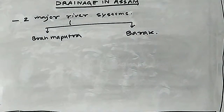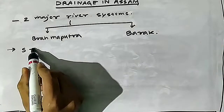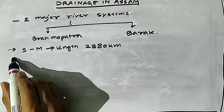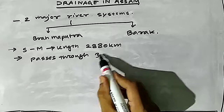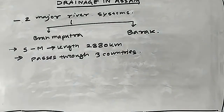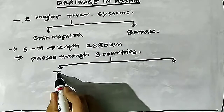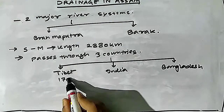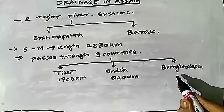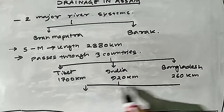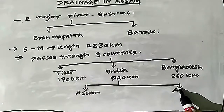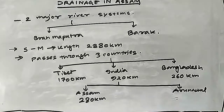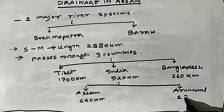Starting from the Brahmaputra basin, which can be said to be one of the largest rivers in the world. The source-to-mouth length of Brahmaputra is about 2,880 kilometers. It passes through three countries: Tibet (China), India, and Bangladesh. Tibet holds 1,700 km, India 920 km, and Bangladesh 260 km. In India, it flows through Arunachal Pradesh (280 km) and Assam (640 km).